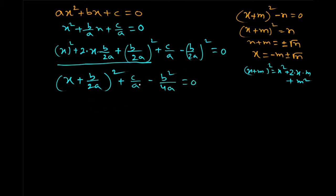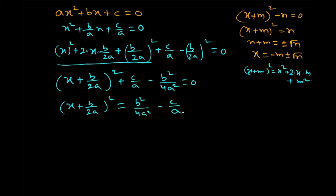Now let us transpose the extra terms to the right side. So you get x plus b divided by 2a, whole squared, equal to b squared divided by 4a squared minus c by a.